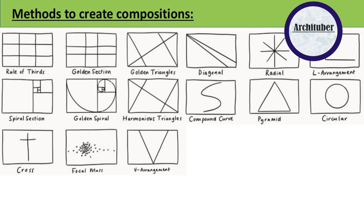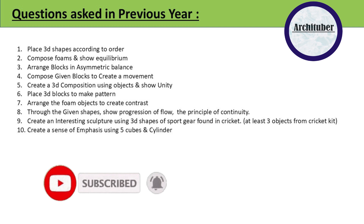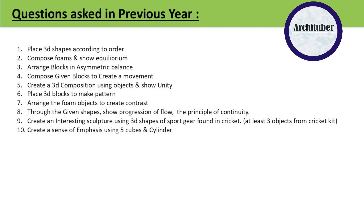Now discussing questions that were asked in previous years: first — place 3D shapes according to order; second — compose forms and show equilibrium; third — arrange blocks in asymmetric balance; fourth — compose given blocks to create movement; fifth — create 3D composition using objects and show unity; sixth — place 3D blocks to make a pattern; seventh — arrange form objects to create contrast; eighth — through the given shape show progression of flow and principle of continuity; ninth — create an interesting shape sculpture using 3D shapes of sport gear found in cricket, at least 3 objects from the cricket kit; tenth — create a sense of emphasis using pipes, cubes, and cylinders.